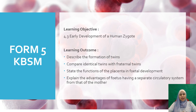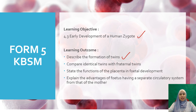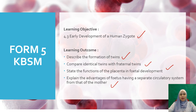For Form 5 KBSM, the learning objective is 4.3, Early Development of a Human Zygote. The learning outcomes are: describe the formation of twins; compare identical twins with fraternal twins; state the function of placenta in fetal development; and explain the advantages of fetuses having a separate circulatory system from that of the mother.